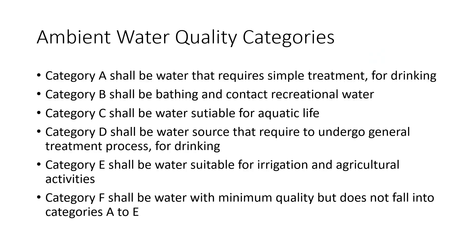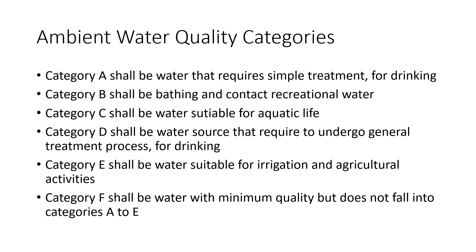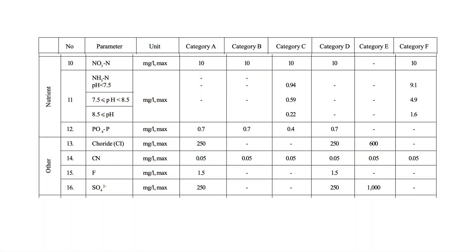Categories A and D have the most parameters listed, as both relate to drinking — category A for simple treatment and category D for general treatment. For categories B, C, E, and F, some parameters are not listed, as these cover bathing and recreation, aquatic life, irrigation, and minimum quality respectively. The act also lists nutrient indicators such as nitrate, ammonia, and phosphate, with ammonia divided into sub-categories based on pH value.